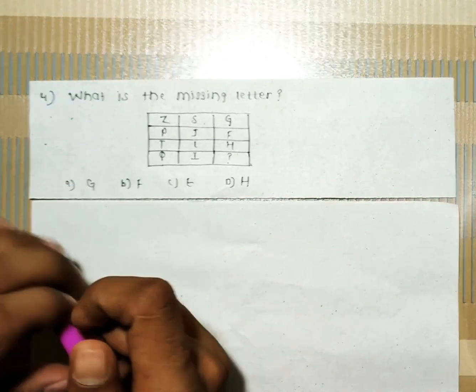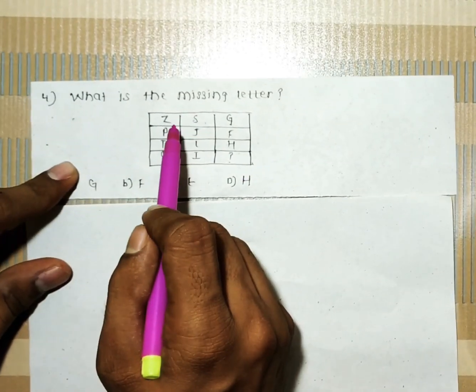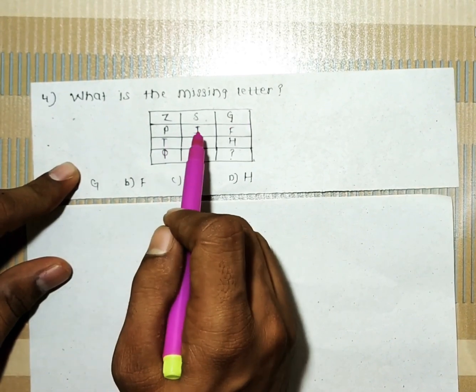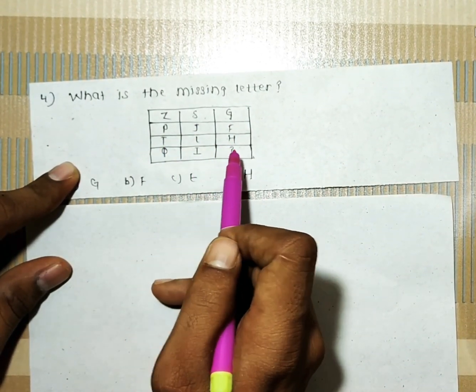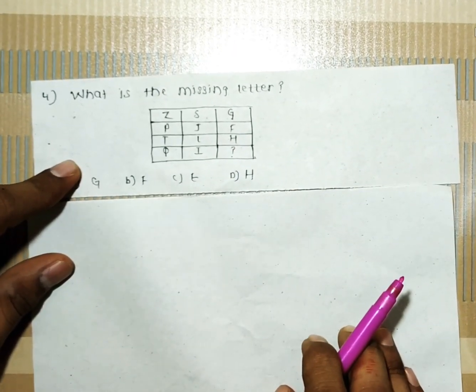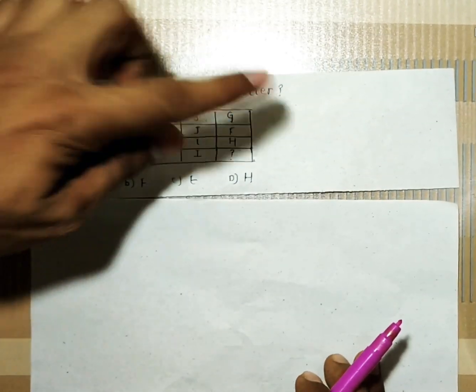Let's see the next question. What is the missing letter? They have given us Z, S, G, P, J, F, T, L, H, Q, I. And we have to calculate this. What should be the letter here? We have to calculate it. Now let's see.